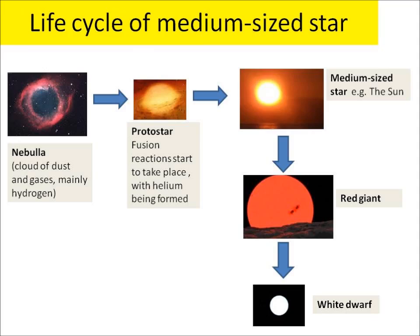With a medium-sized star like the Sun, eventually it becomes a red giant. What will happen is the outer layers will expand, but the inner core actually collapses due to gravity. Then you've got a red giant. Finally, the gravitational pull on the red giant causes that star to collapse, and eventually it will become a white dwarf. And that's a medium-sized star.